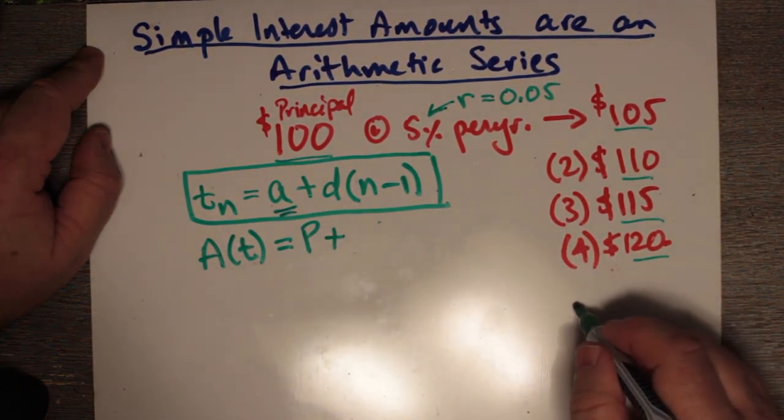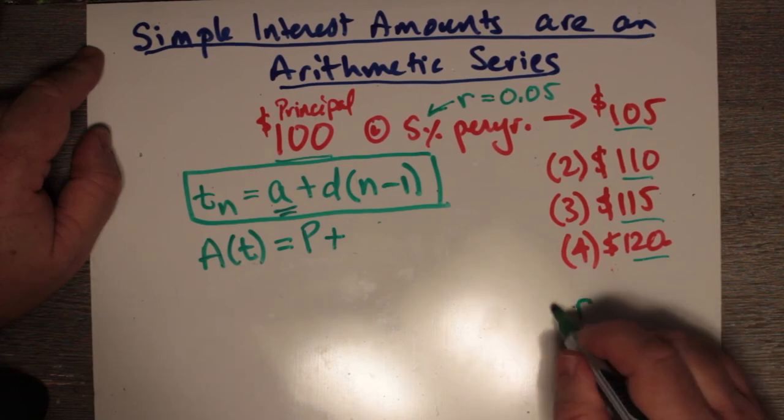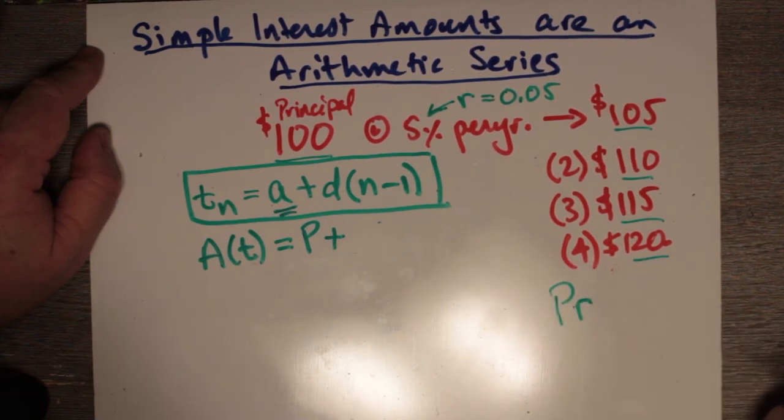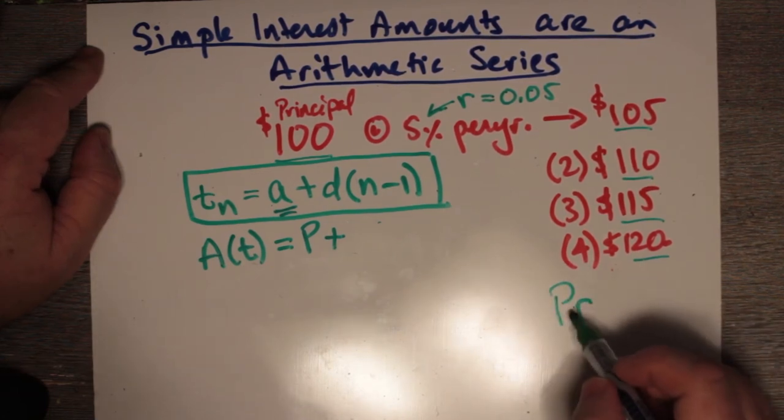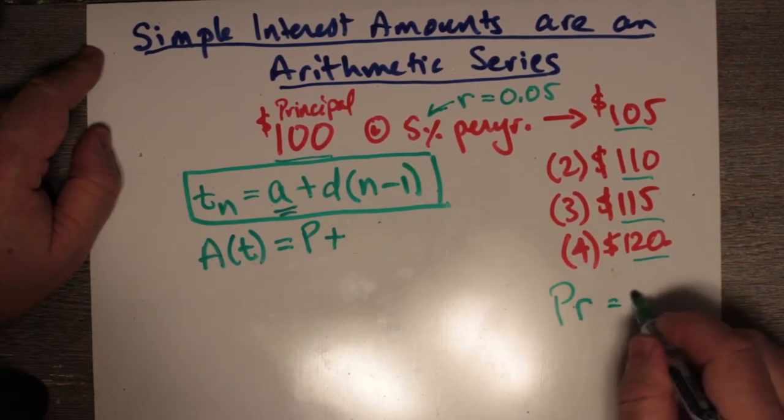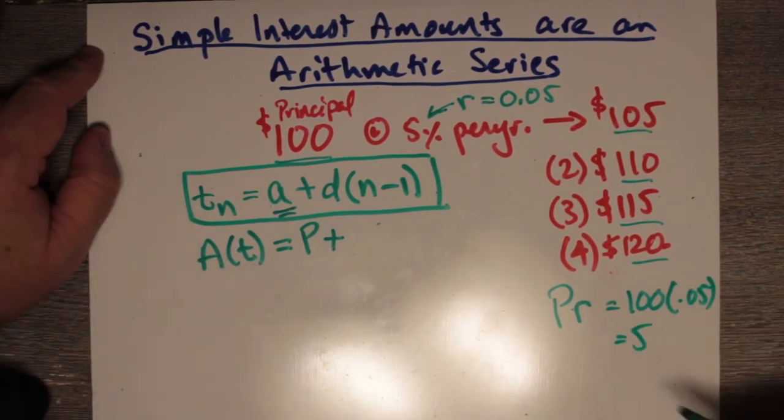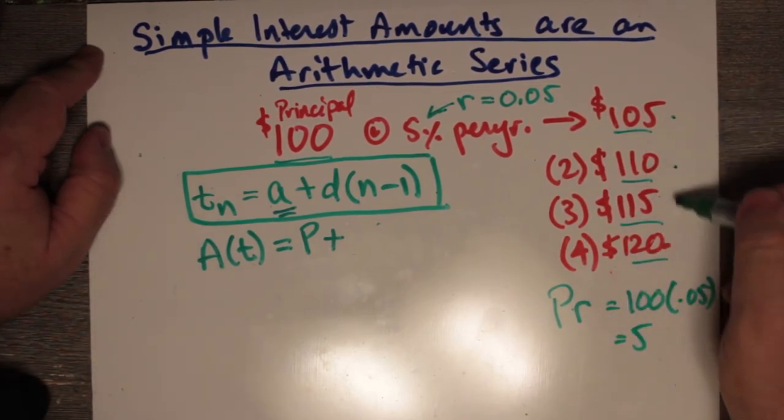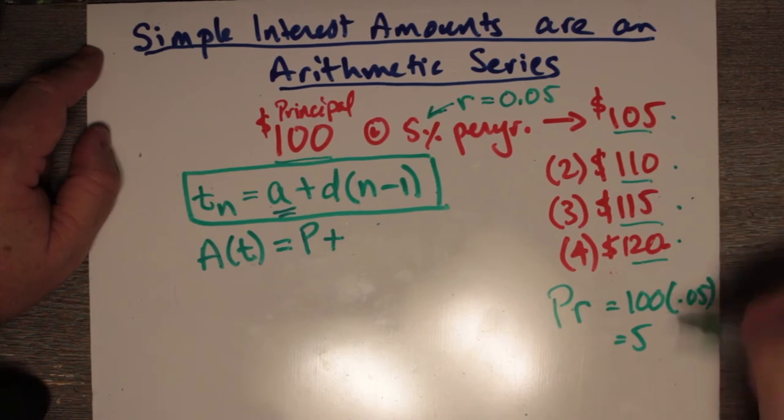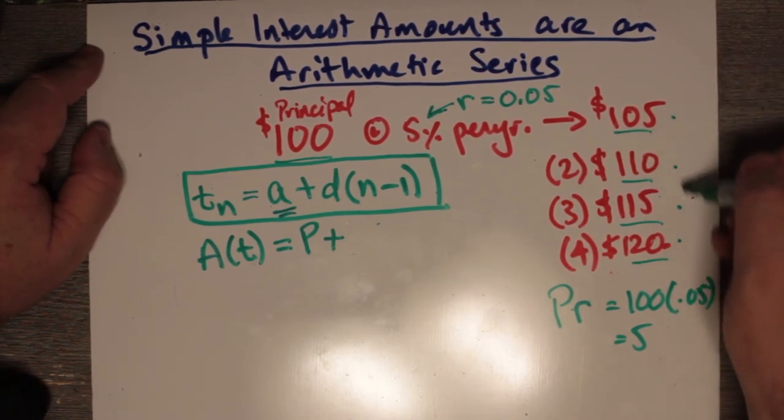Well, we know that the percentage, R, is multiplied by the principal. So this is like where you get 100 times 0.05, and this is where you get your $5 from, which you keep adding to each of these amounts, or which you keep adding to 100 to make these growing amounts.